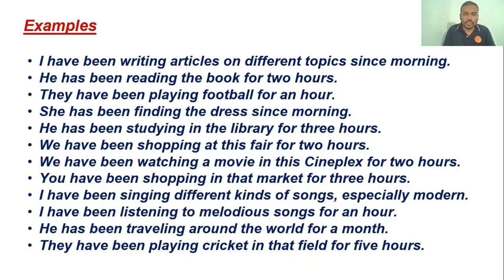Let's go through more examples. 'He has been studying in the library for three hours.' 'We have been shopping at this fair for two hours.' 'We have been watching a movie in this multiplex for two hours.' 'You have been shopping in that market for three hours.' You can go through these and understand what the present perfect continuous tense is.